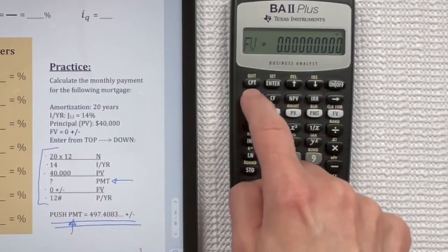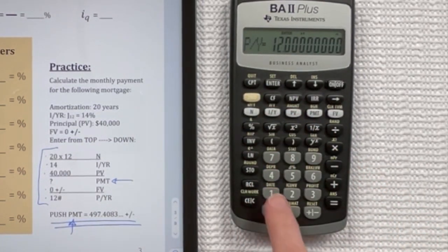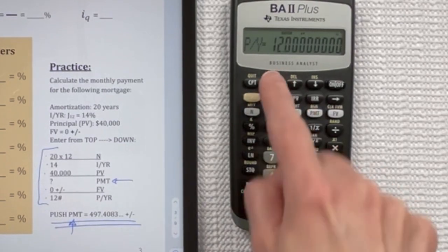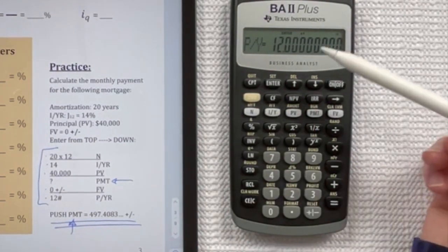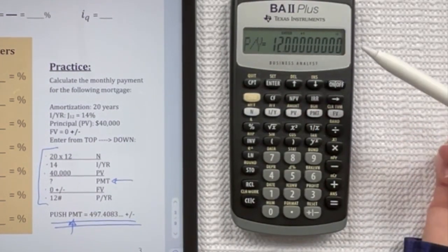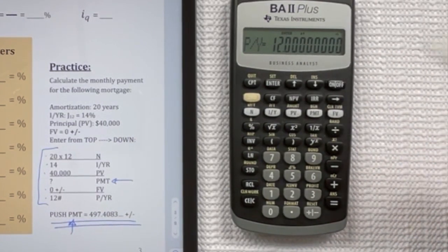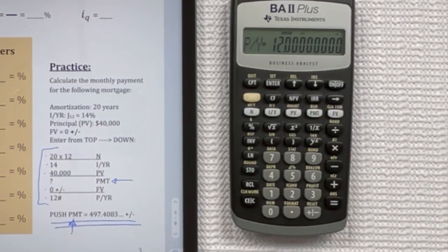And then we're going to go into our second PY, and we would press 12 enter. Now it already was 12 that was in there, so you wouldn't need to change it. But I just did that to show you how you need to do it.